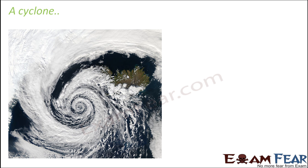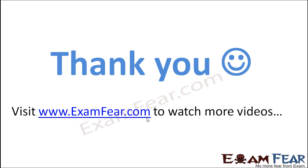Here you can see a picture of a real cyclone near an ice land, where there is ice and snow everywhere. Cyclones happen there too. This gives a clearer picture of how the center is created and how the winds revolve around it at very high speeds.